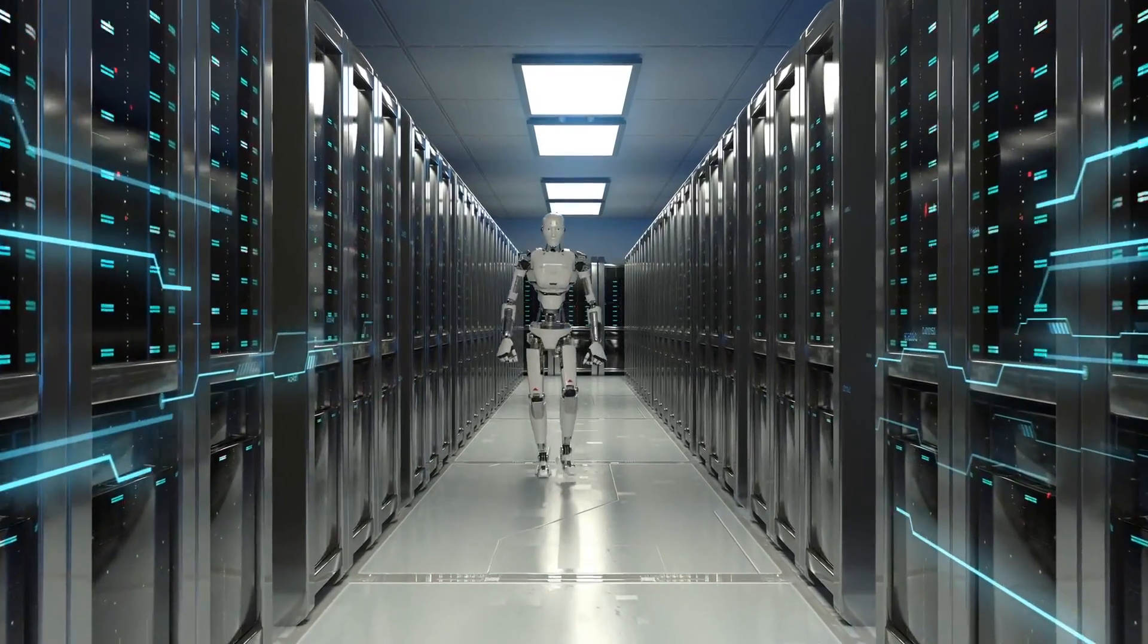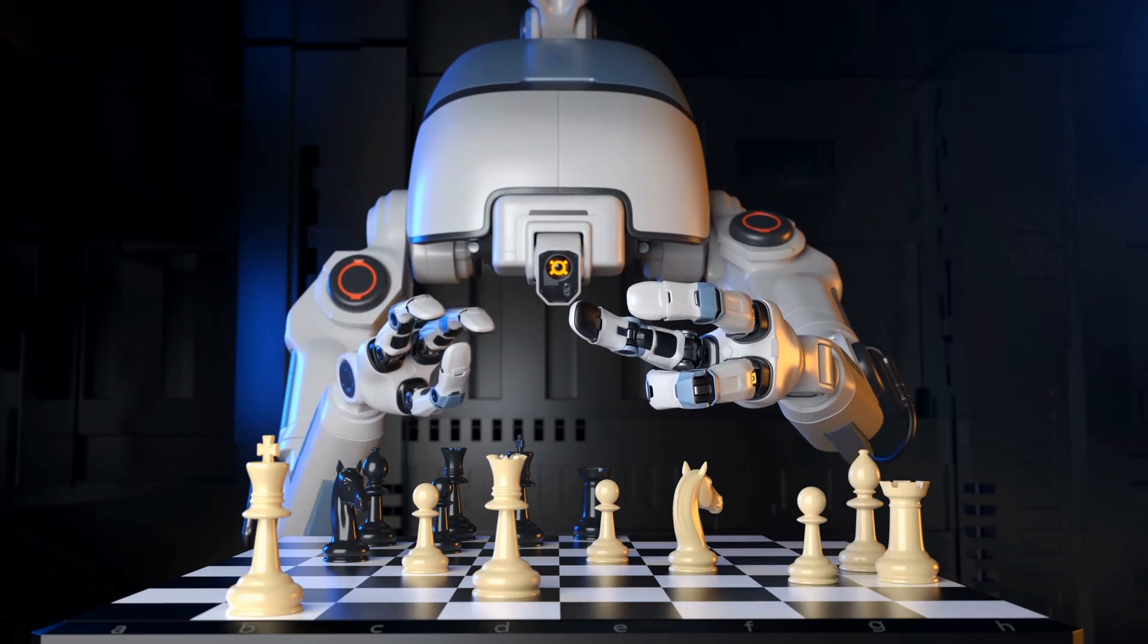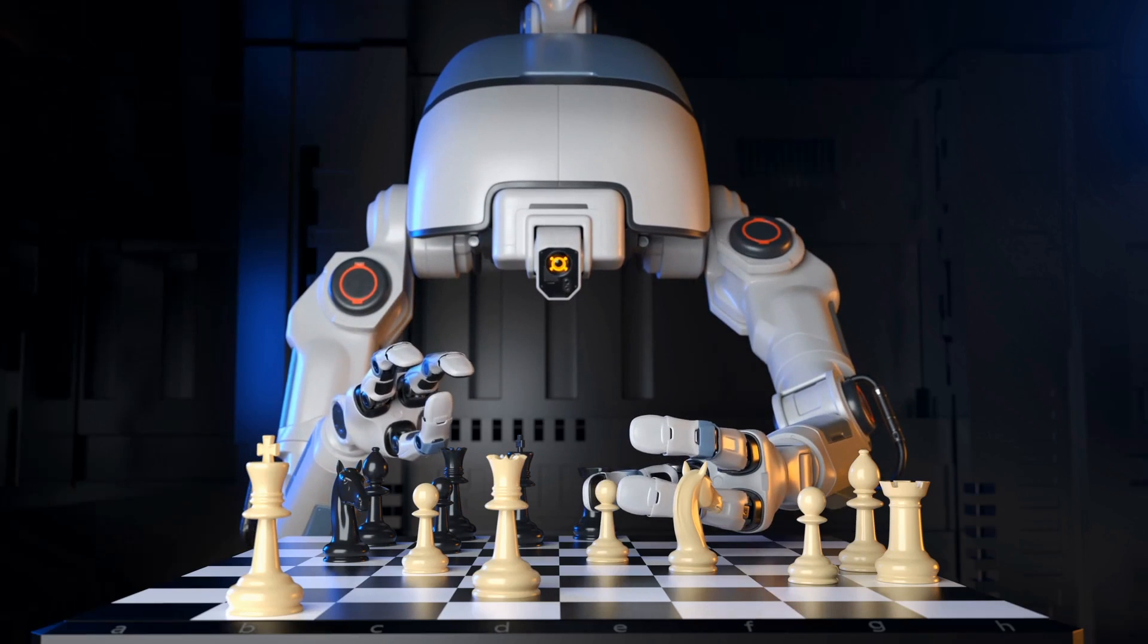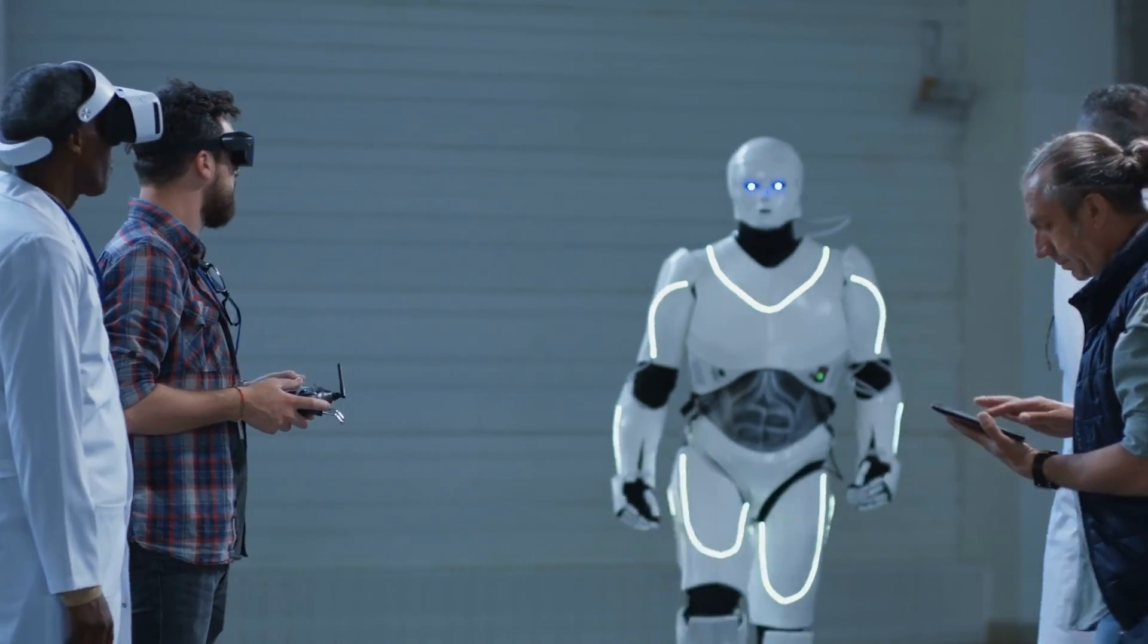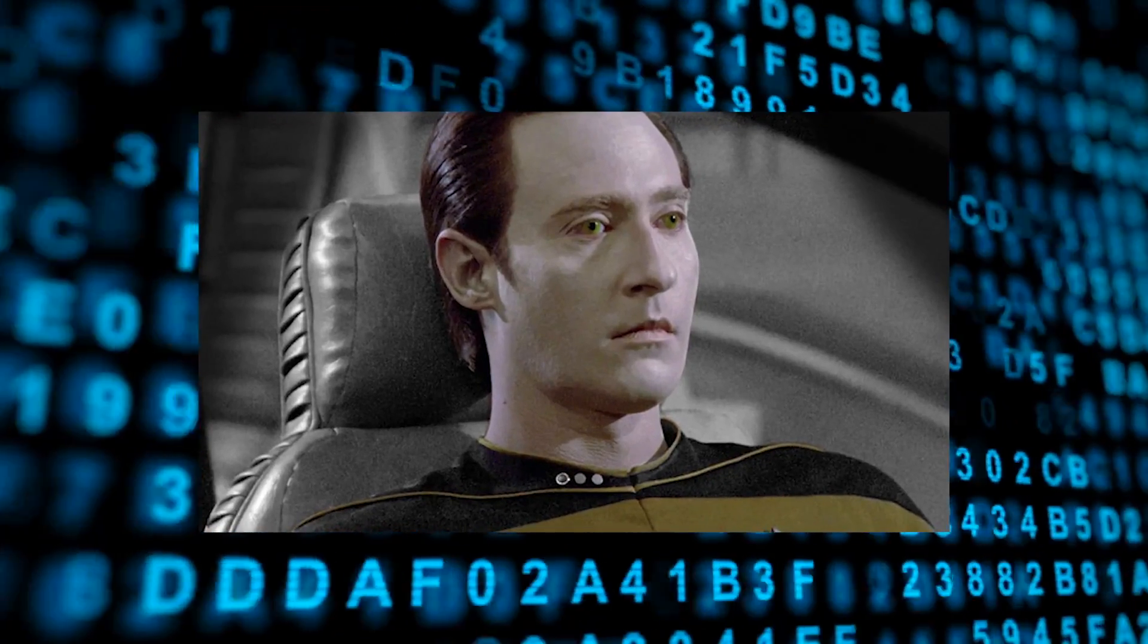Artificial general intelligence. We have not achieved this level yet. At this level, a machine can solve problems it's never been trained to work on, much like a human can. This is the kind of AI we see in movies, like the character Data from Star Trek The Next Generation.